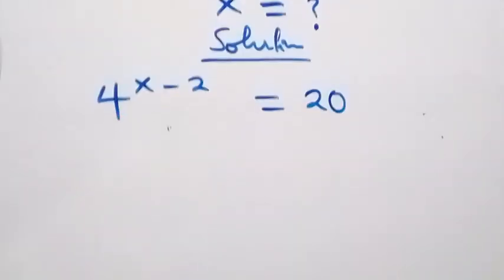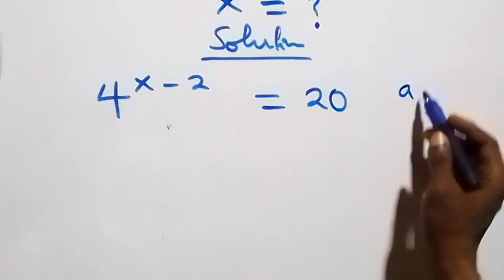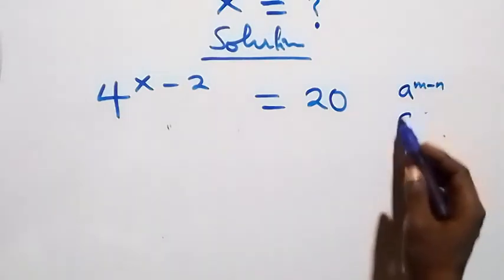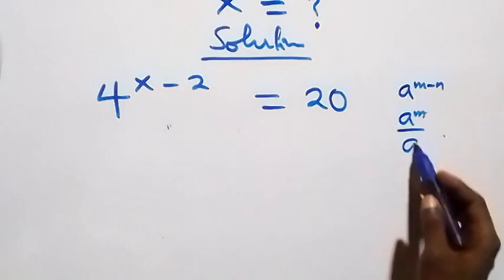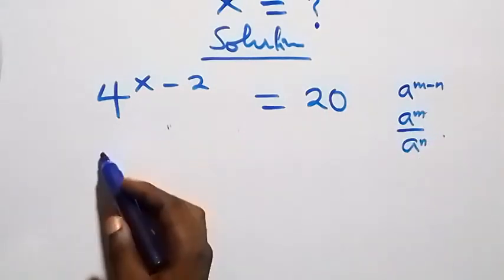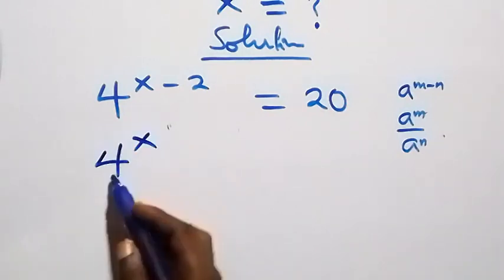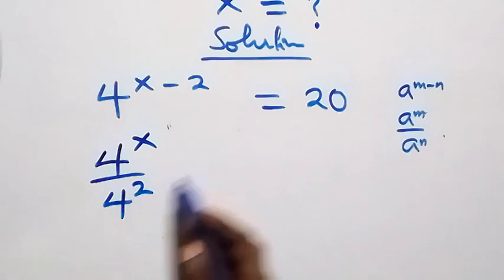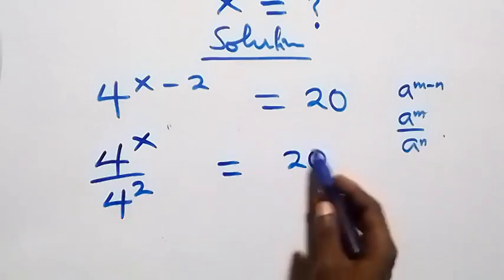This follows from the rule that a raised to power n minus n equals a raised to power n over a raised to power n. So here we have 4 raised to power x over 4 squared equals 20.